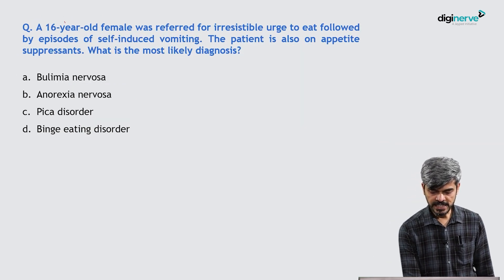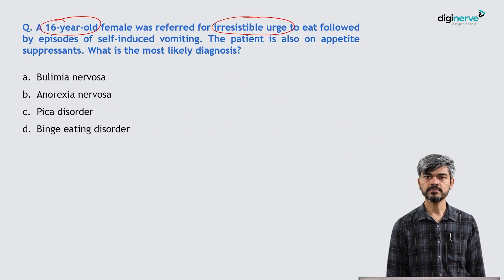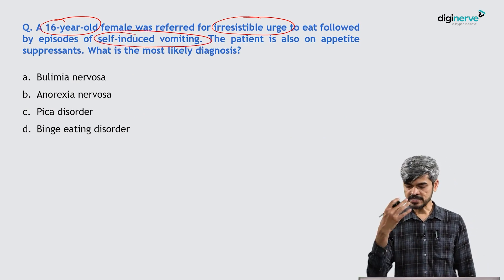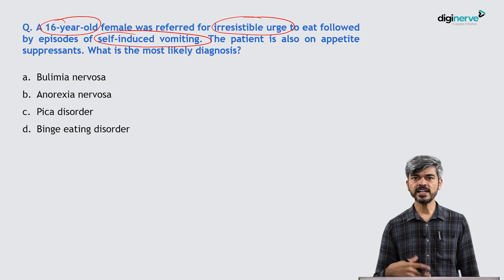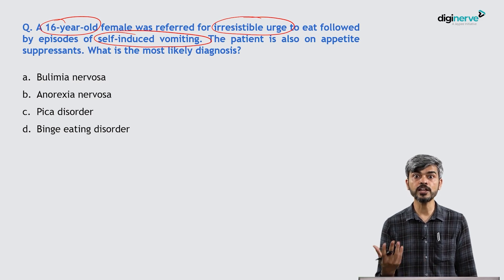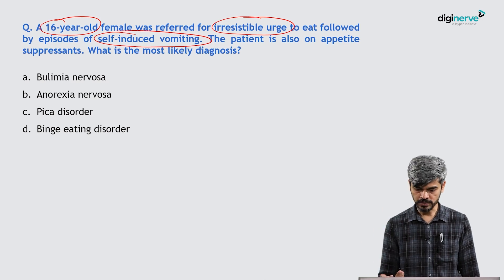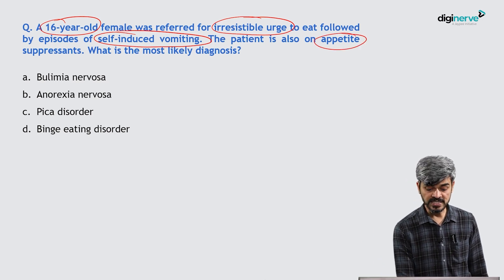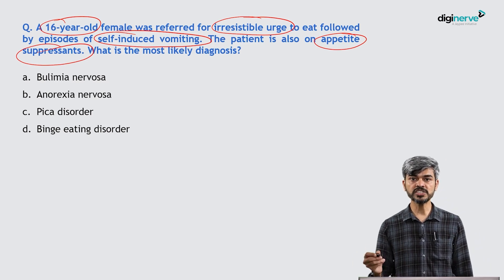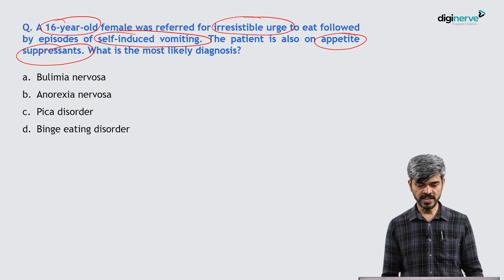Next question: A 16-year-old adolescent female was referred for an irresistible urge to eat followed by episodes of self-induced vomiting. The person has an irresistible craving to eat, then feels very guilty, fears weight gain, and induces vomiting — purging. The patient is also on appetite suppressants, trying hard to avoid cravings for food. What is the most likely diagnosis?